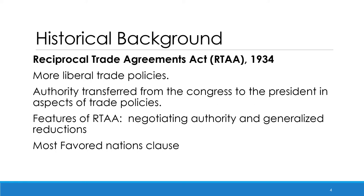In 1934, Congress passed the Reciprocal Trade Agreement Act. This act transferred authority from Congress to the President in shaping trade policies. This procedure helped considering the national interest instead of the policies pursued by Congress, which favored domestic import-competing producers. This act was characterized by two attributes: first, bilateral reciprocal concessions, and second, generalized concessions. Under this act, the President was authorized to negotiate bilateral tariff reduction agreements with other countries without congressional approval.